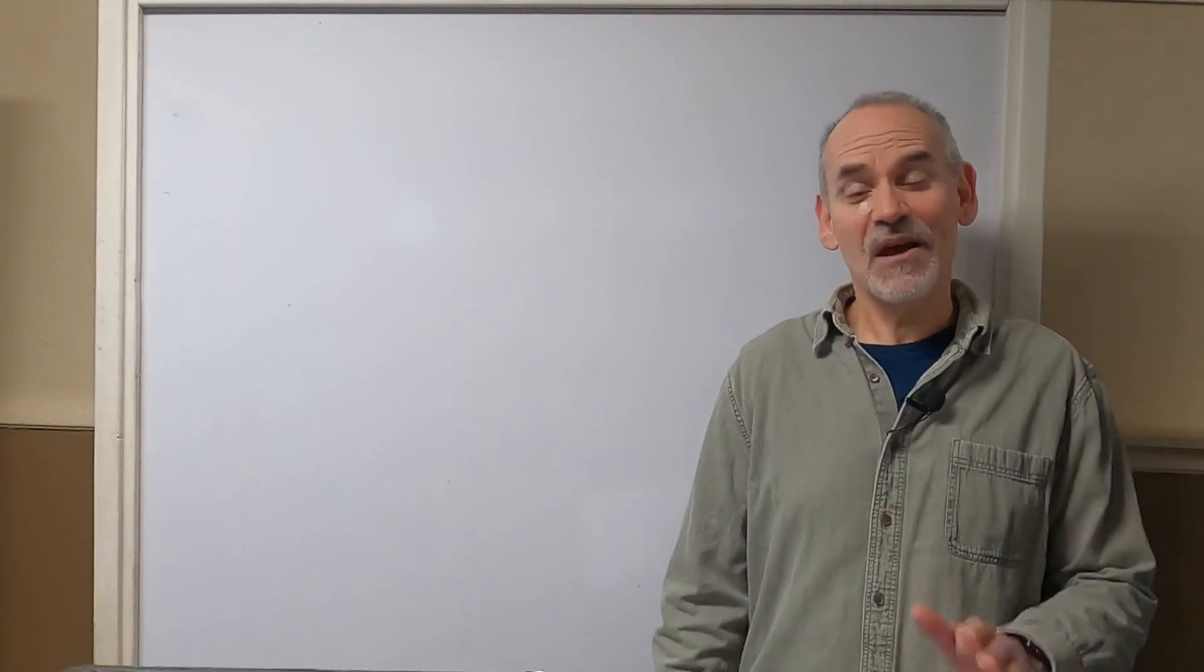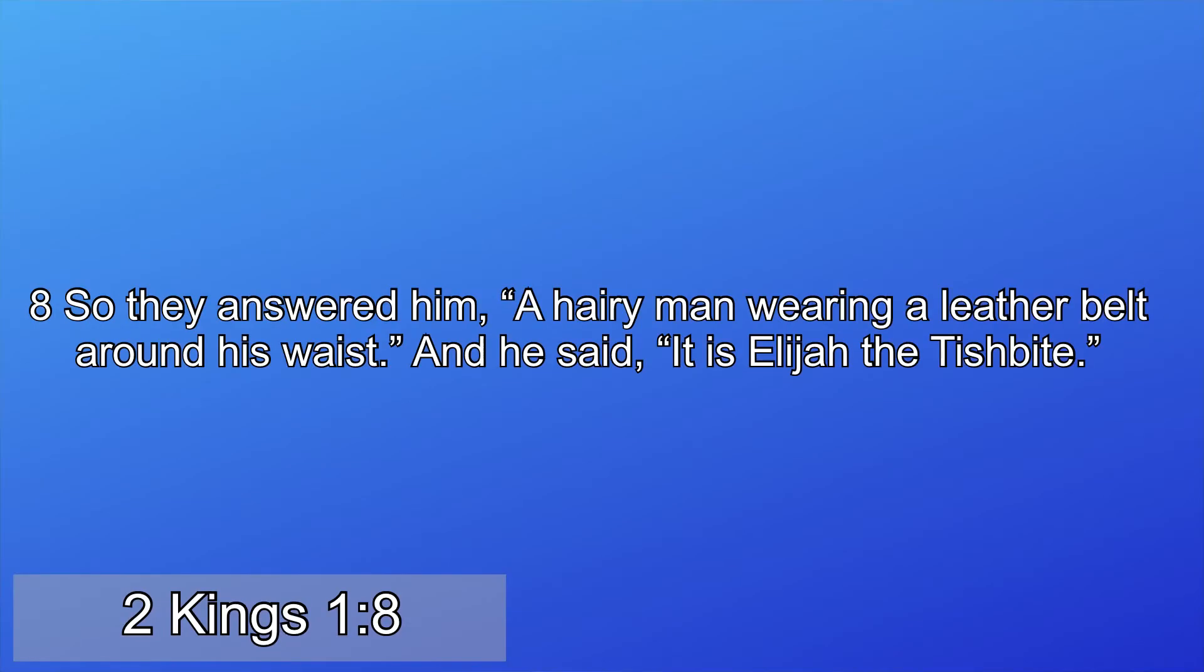Question number four, what is significant about how John was dressed? Mark chapter one, verse six gives us a description. Well, here he is dressed as a typical holy man of the Middle East. In fact, he's dressed just like Elijah. We have a reference out of second Kings chapter one, verse eight, that really gives a description of how Elijah the prophet dressed. And the reference is a hairy man wearing a leather belt around his waist. And they said, it's Elijah, the Tishbite. Well, here, John the Baptist comes on the scene as a prophet. It's a direct correlation between Elijah and John the Baptist.